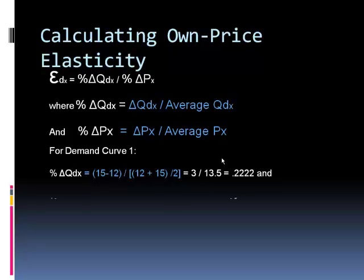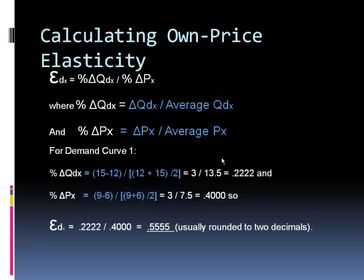Now let's do the percentage change in price. The change in price from 9 to 6 divided by the average price. Add the prices together and divide by 2. The change was $3. And the average price, 9 plus 6 is 15 divided by 2, is 7.5. So 3 divided by 7.5 is .400. So now to get the calculation for the price elasticity of demand, it's the percentage change in quantity, .2222, divided by the percentage change in price, .400. When you do that quick division, you get .5555. We usually round that off to two decimals. And so we would say the price elasticity of demand between prices of $9 and $6 on demand curve number one is .55.